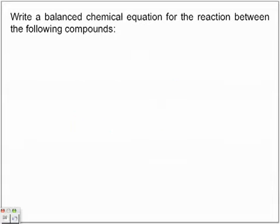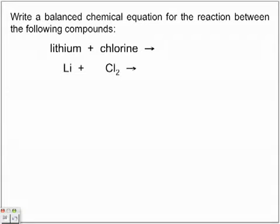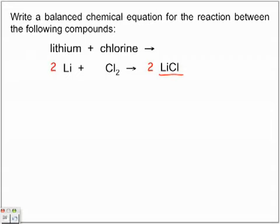Let's look at a few other quick compounds. We have lithium combined with chlorine — metal and non-metal. So we have lithium plus chlorine, with chlorine being diatomic. Lithium and chlorine when they come together form the compound LiCl. Using the five-step crossover rule gives you lithium chloride, and to balance it we place twos in the appropriate places.